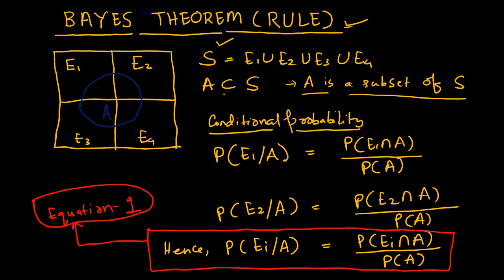And set A is a subset of set S. So that is the scenario. Now we want to find out what is the conditional probability of E1 given A. So given A, the conditional probability of E1 will fall somewhere here, because that is the common area. This area divided by the total area of A — that is the conditional probability of E1 given A.